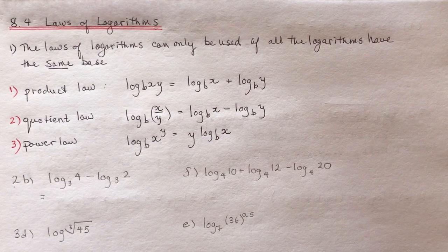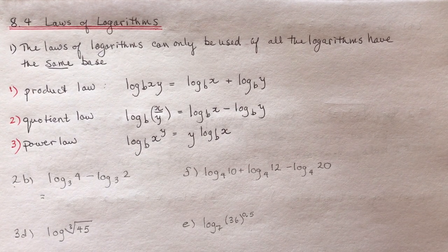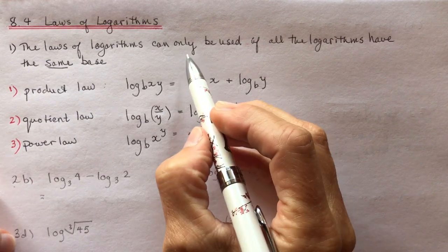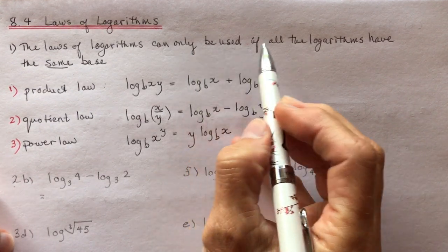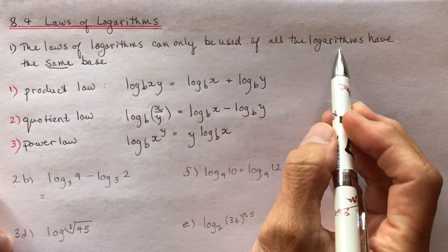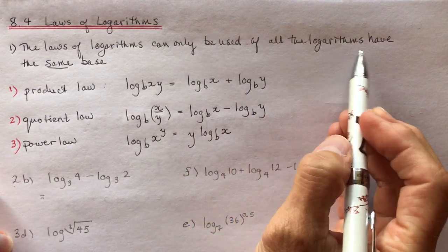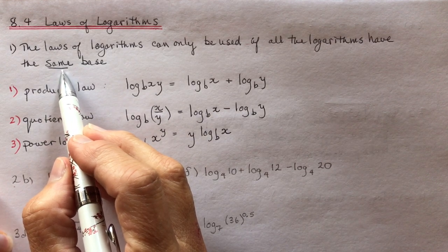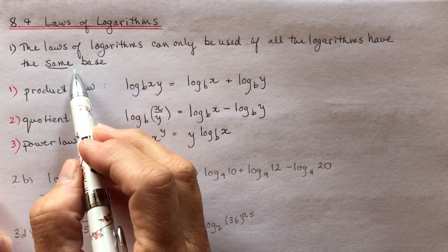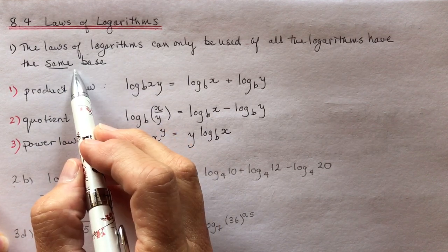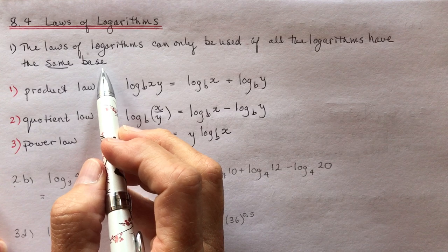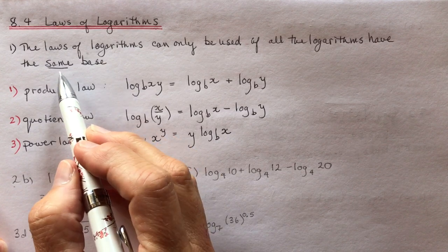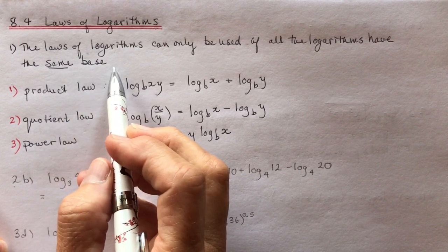8.4 Laws of Logarithms. The most important thing about these laws is that they can only be used if all the logarithms have the same base. If they have a different base and you're asked to evaluate something, you would need to evaluate each of them separately.